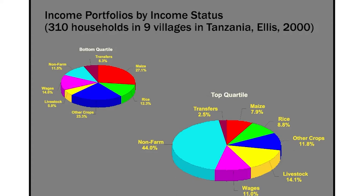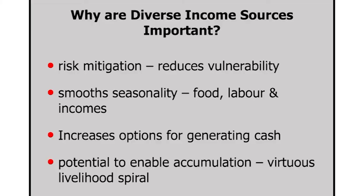We always need to remember that people are not homogenous — we are differentiated by income categories, by the resources we have, by gender. Women, for instance, even in landed households, their ability to raise income might be much less because they may not have land at their disposal.